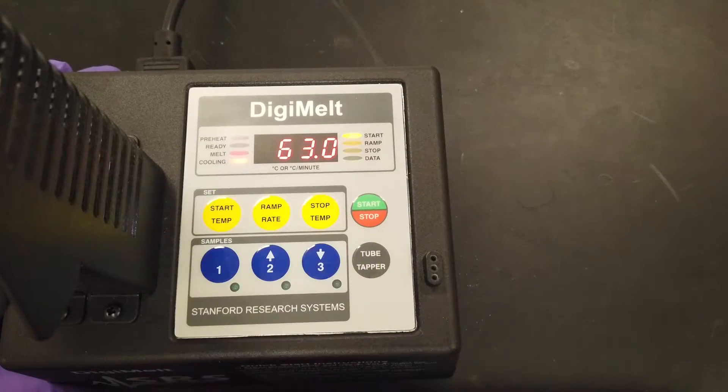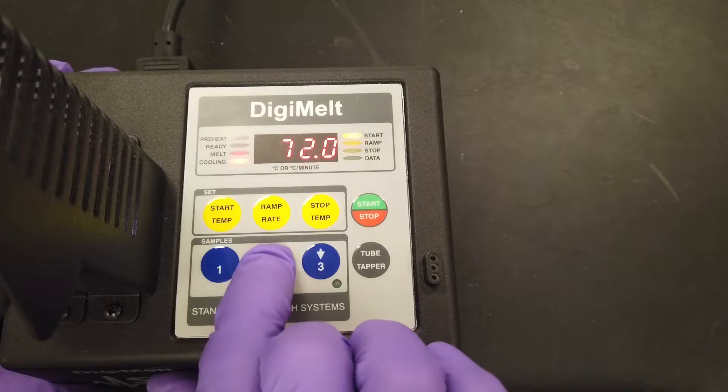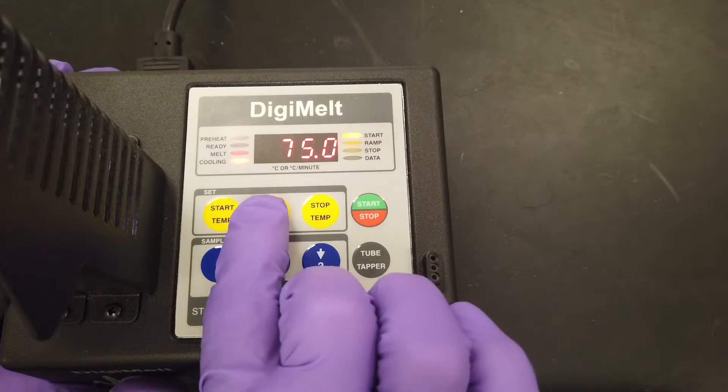Setting the parameters. First, select the starting temperature by pressing the start temp button. Then press the up or down arrow to the appropriate starting temperature and press start to confirm.